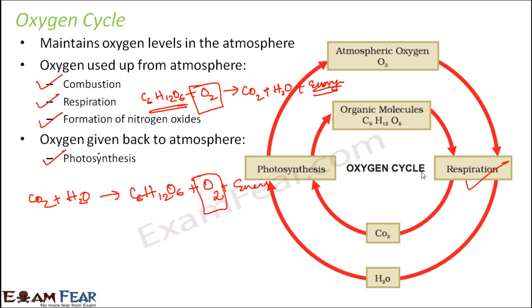Looking at this diagram, atmospheric oxygen is used up during respiration. In respiration, carbon dioxide and water are the products. In photosynthesis, carbon dioxide and water are the reactants — they combine to form oxygen. The result of photosynthesis is C6H12O6, which is glucose, and this glucose is the reactant for respiration. So these two processes, photosynthesis and respiration, together explain the entire oxygen cycle.